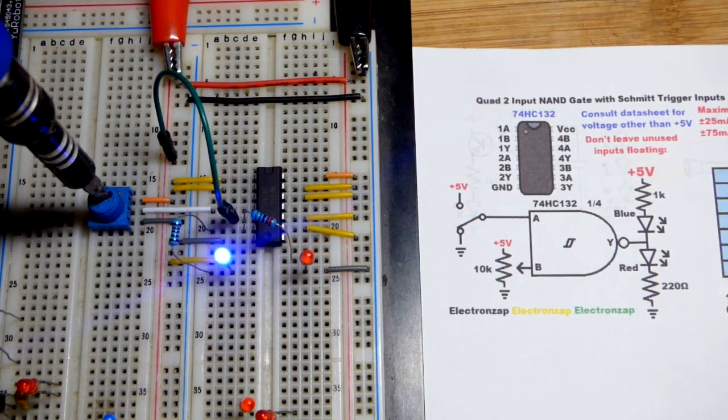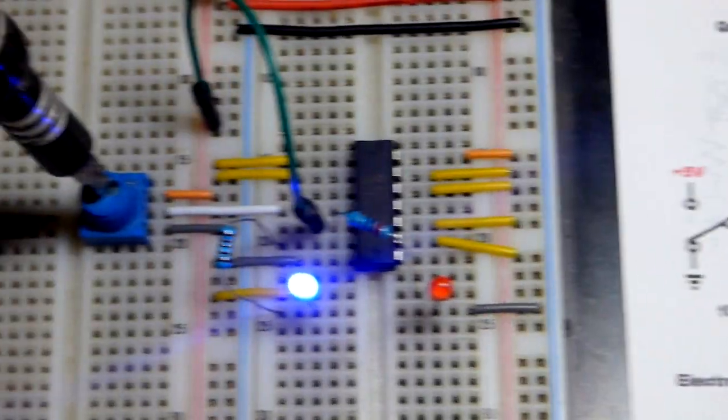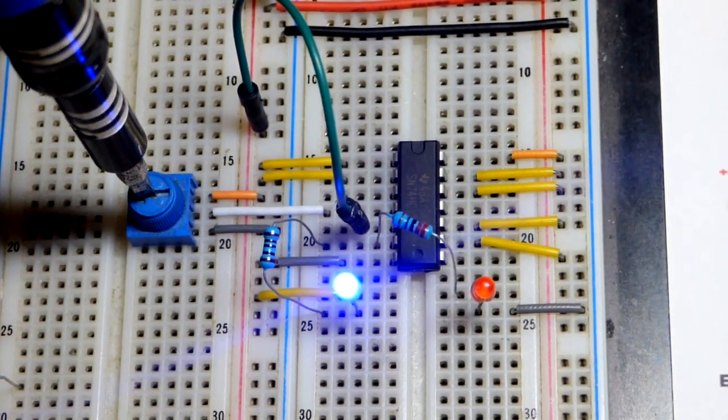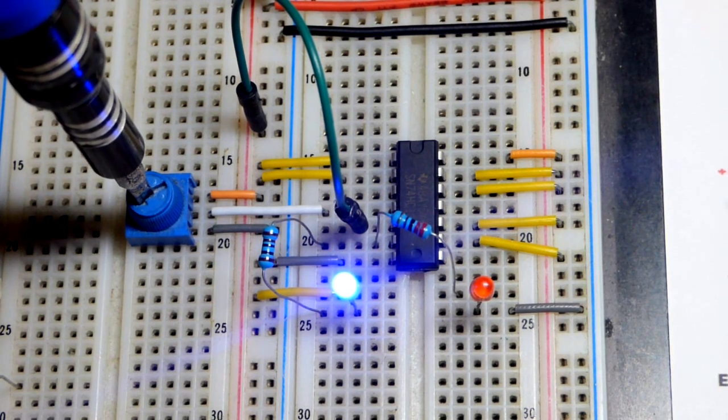But thanks to the Schmidt trigger inputs, we will zoom in. If you saw the last video, when we set the trim pot halfway with the 00, it went erratic, the output.